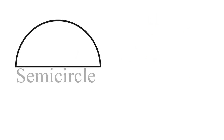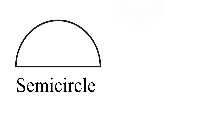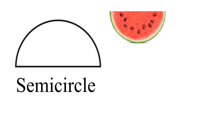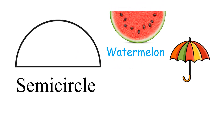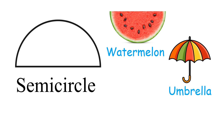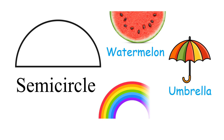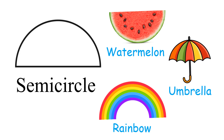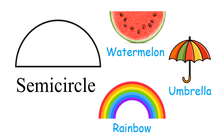Semi-circle. Watermelon. Umbrella. Rainbow. These objects are semi-circle in shape.